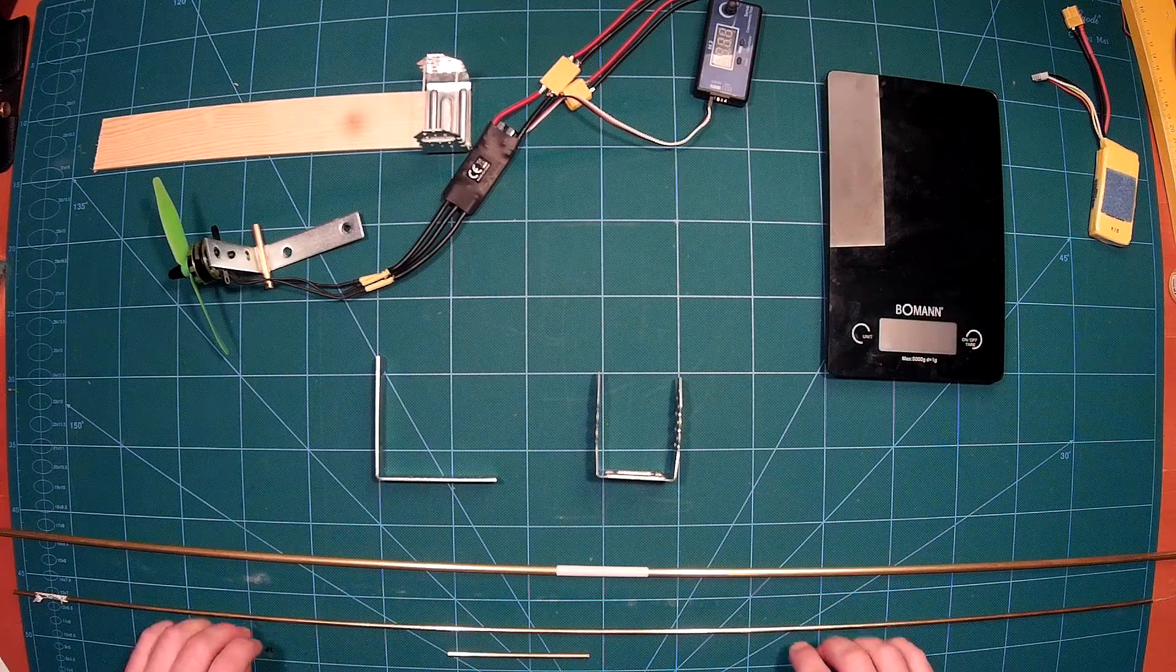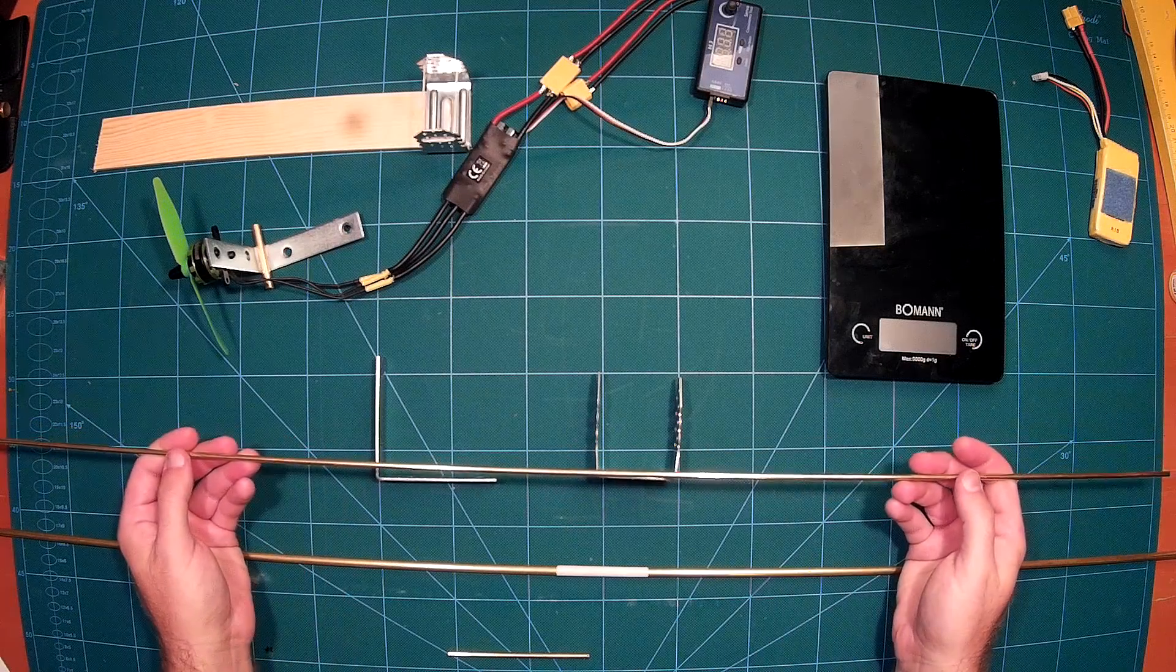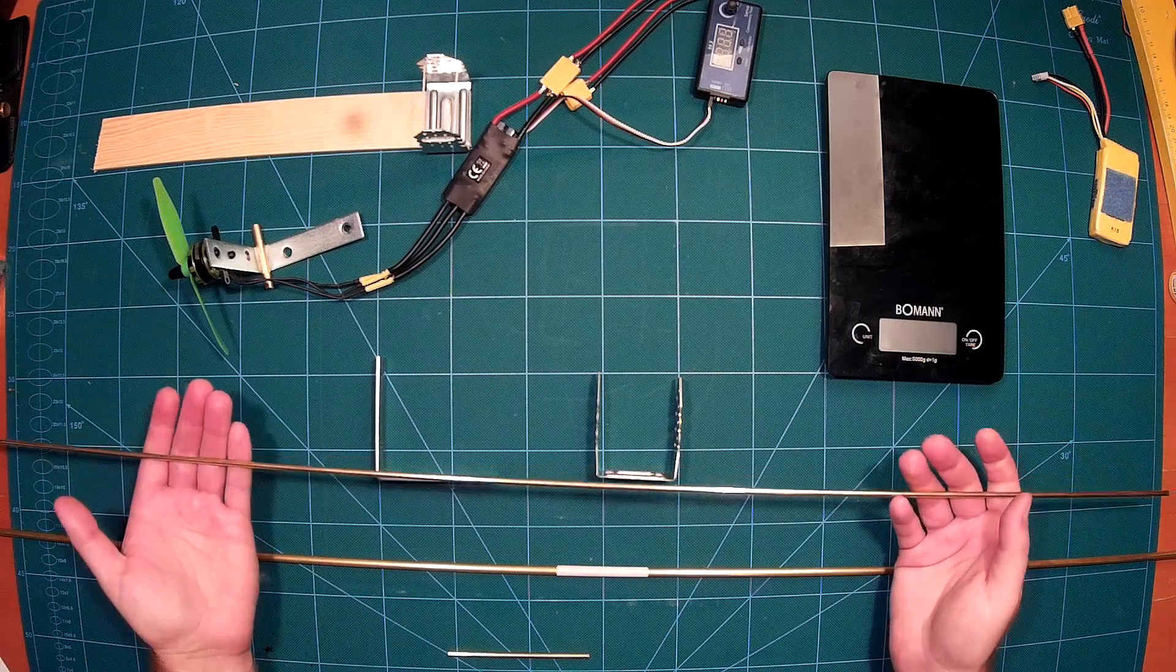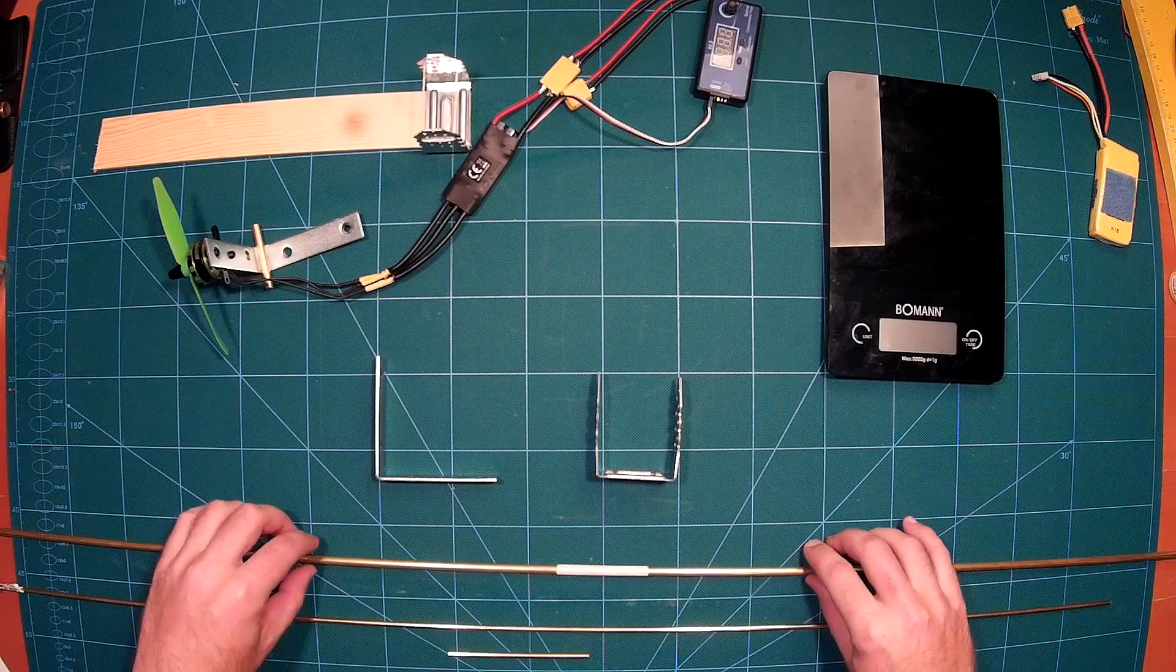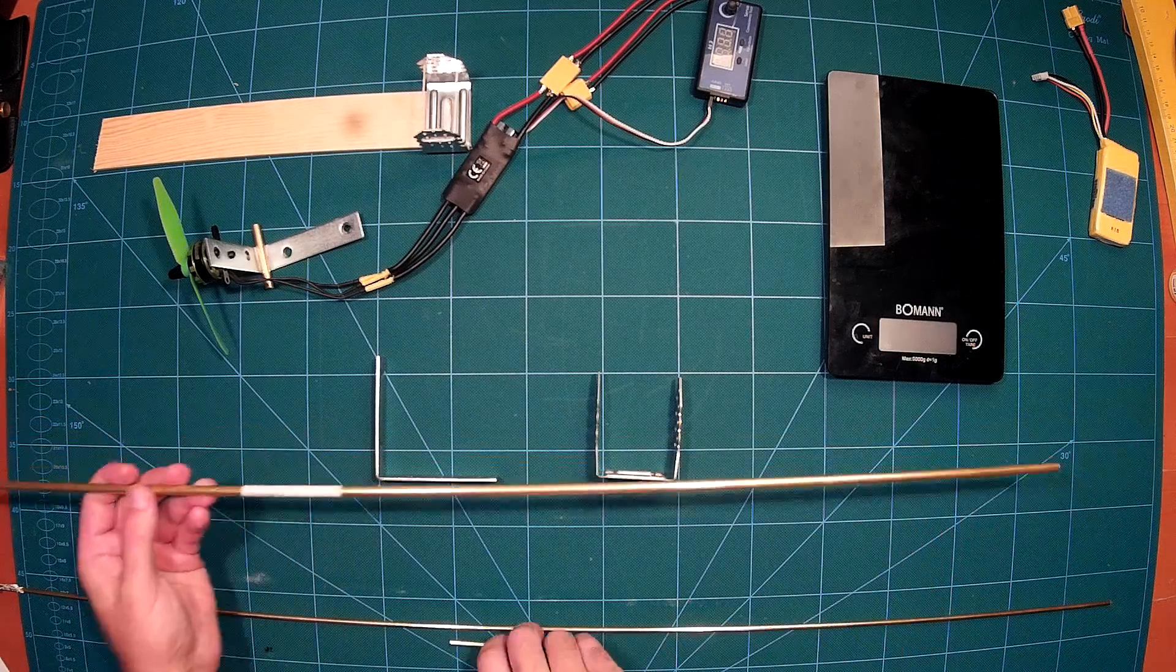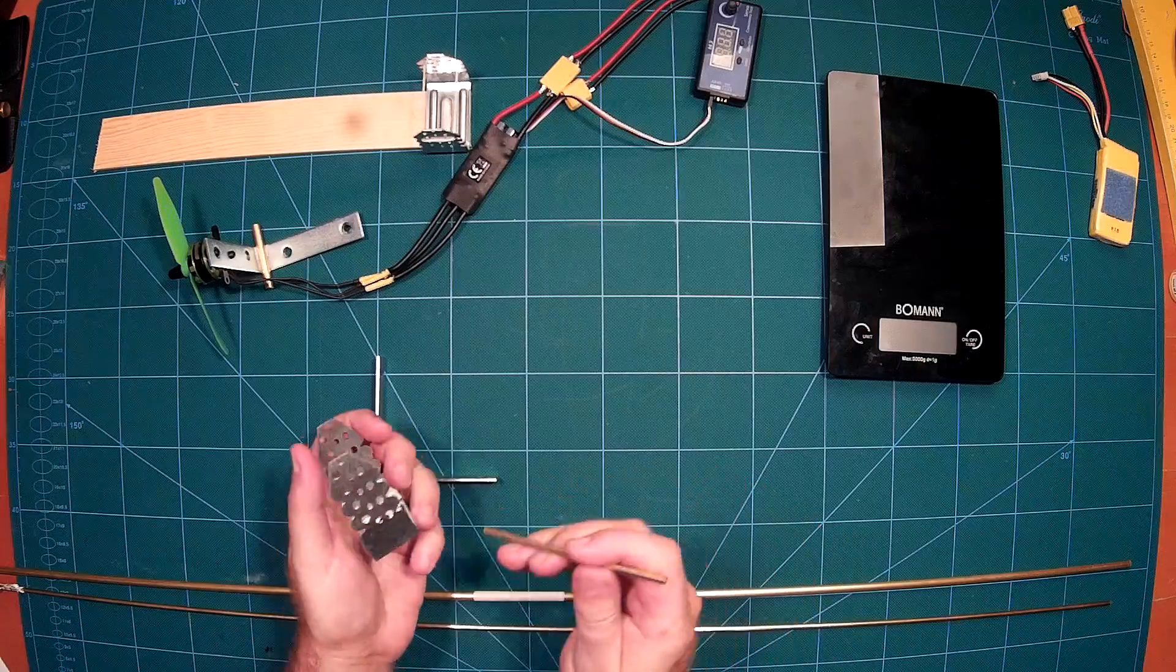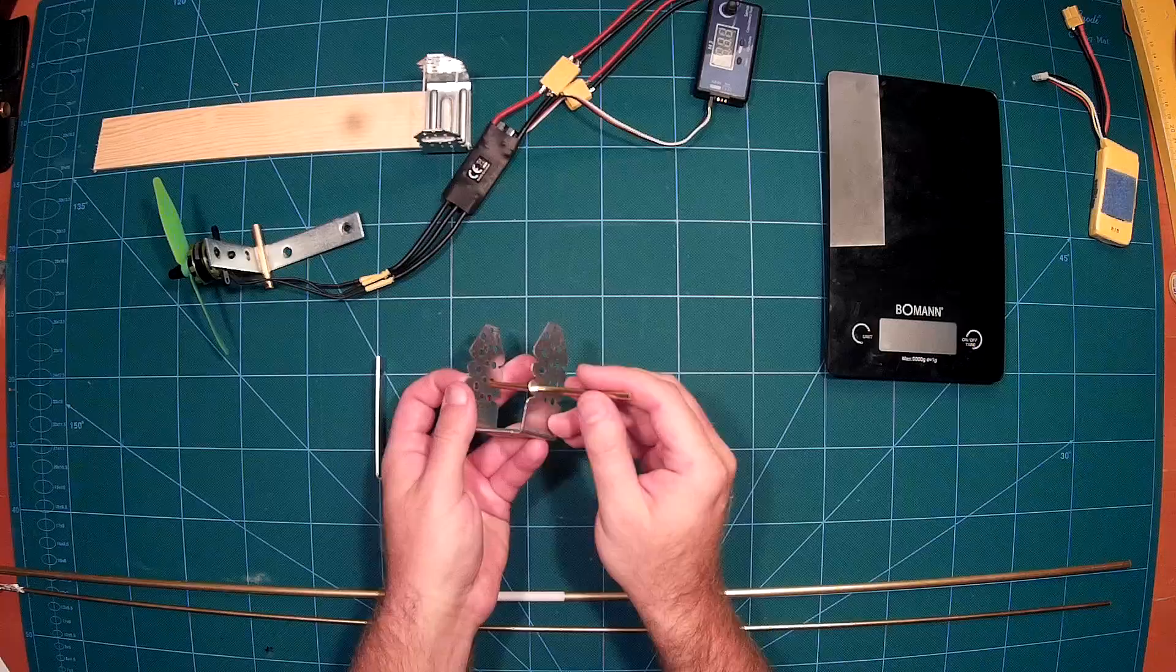The next thing you need is a rod. In my case it's a brass rod, but you can use any material available at your hardware store. And you will need a tube. Again, for me it's a brass tube. The important thing is that the rod fits inside the tube and that the rod fits tightly inside one of these holes from the U bracket.